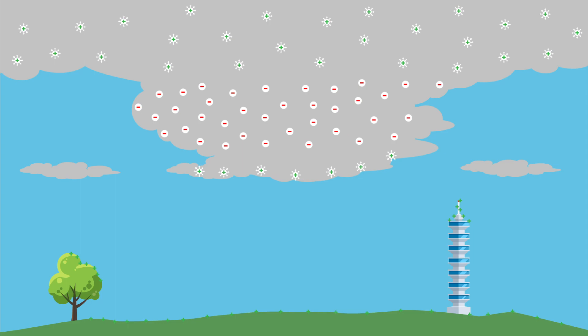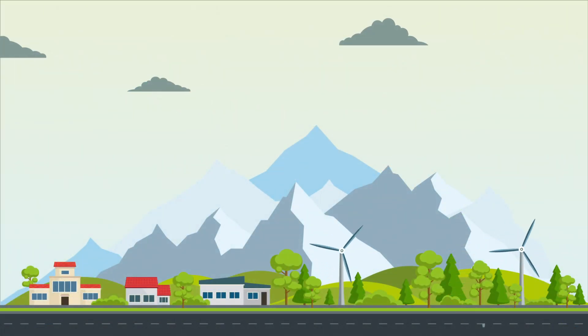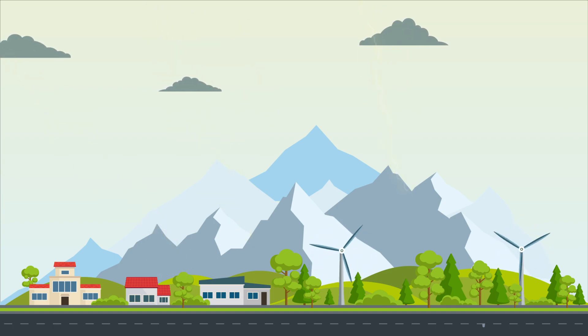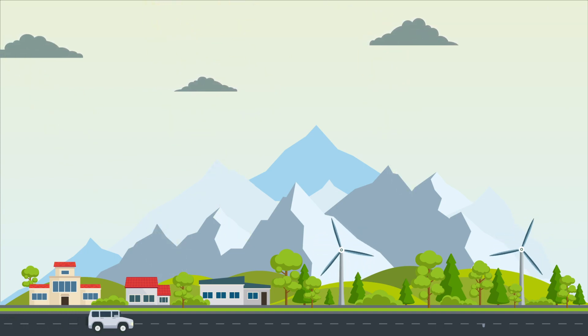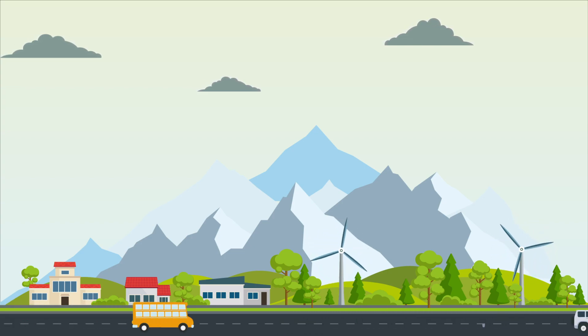Most lightning occurs within the clouds. On Earth, the lightning frequency is approximately 45 times per second, or nearly 1.4 billion flashes per year. The place on Earth where lightning occurs most often is near the small village of Kifuka in the mountains of the Eastern Democratic Republic of Congo.